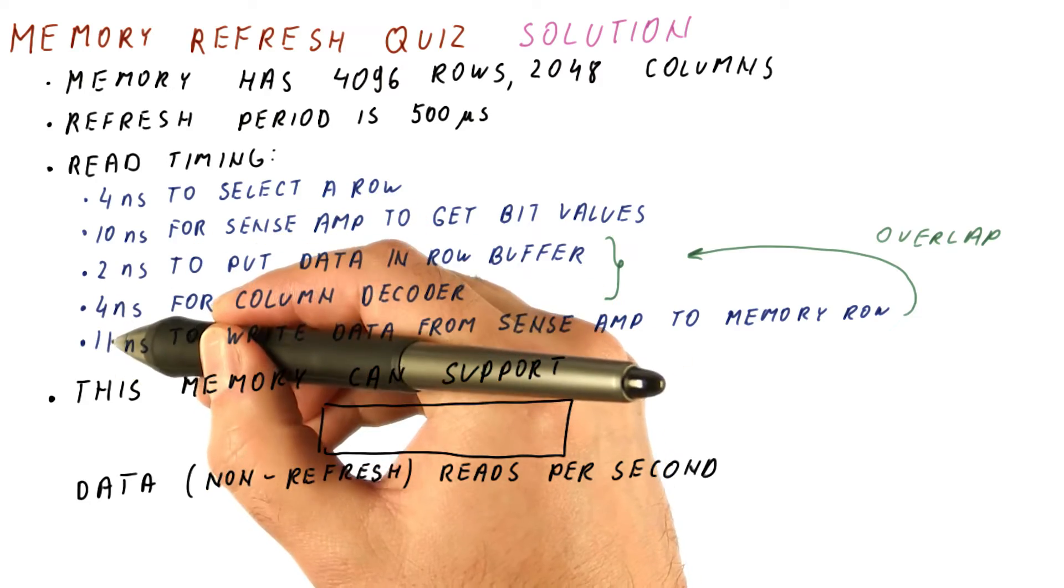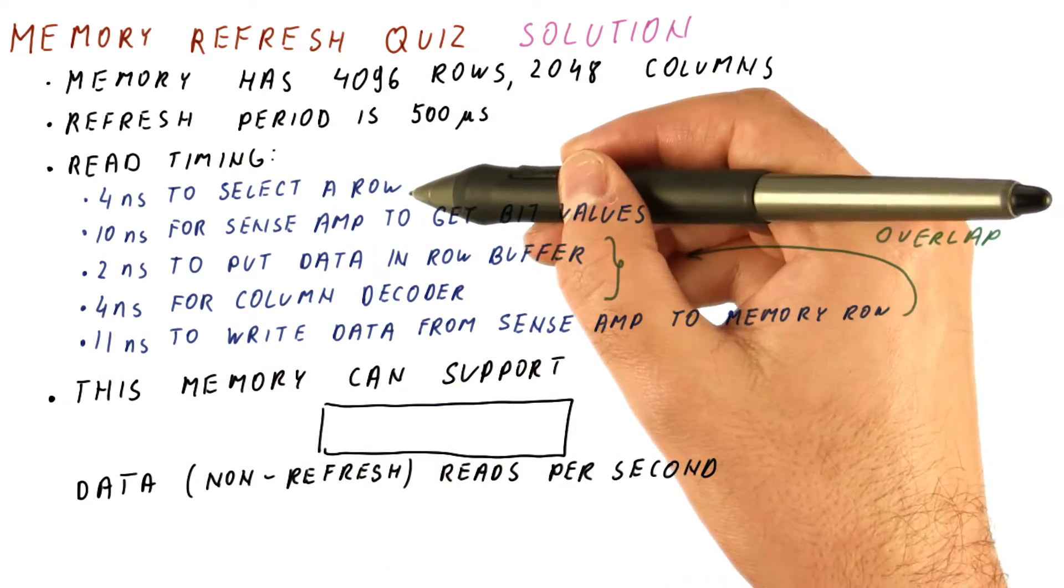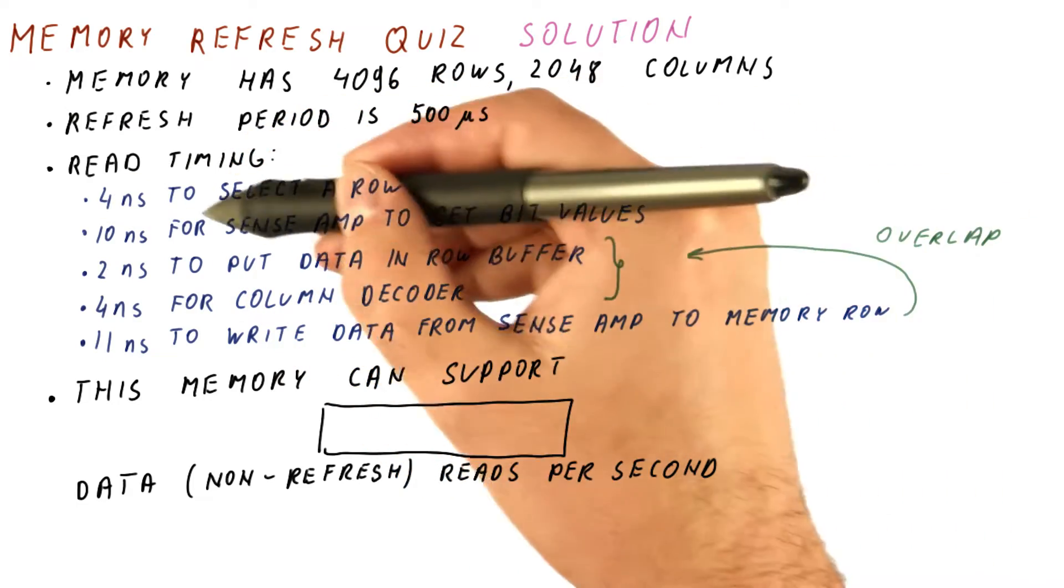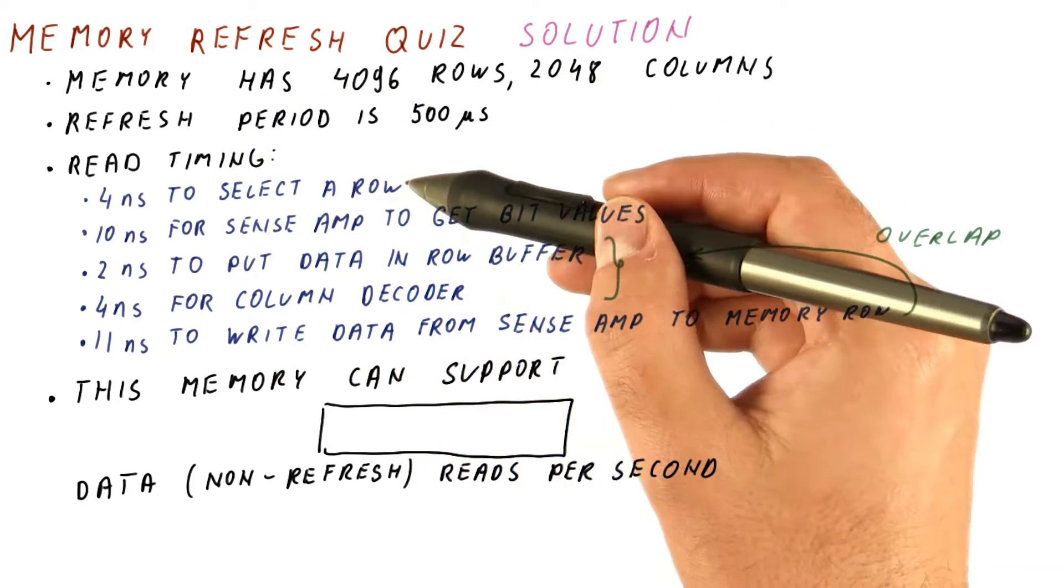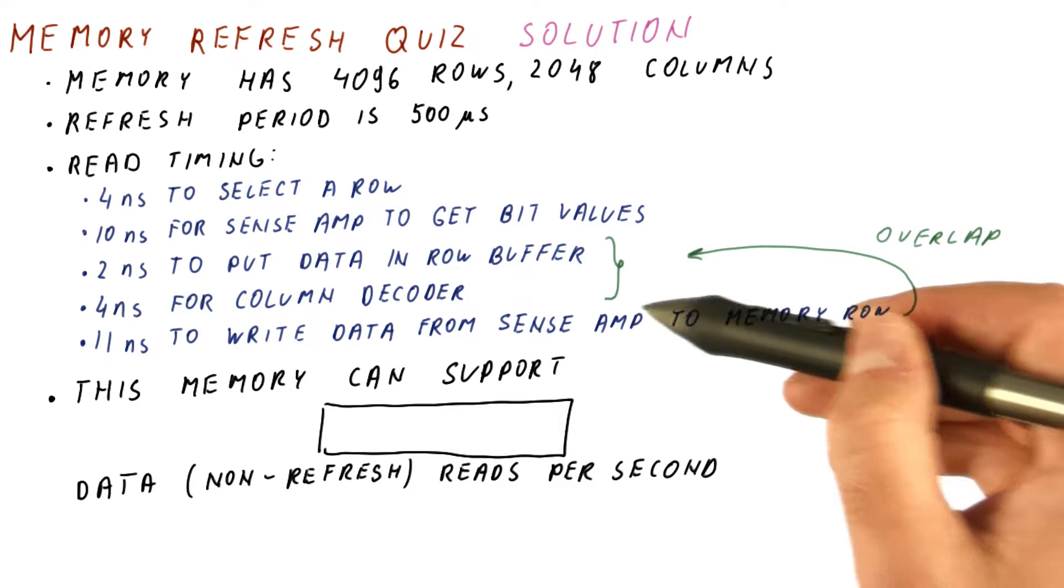Because 2 plus 4 is 6 and 11 nanoseconds is longer, that means that really the timing for a read will be to select a row. So we need to select a row, get the values from the row, and then write the data back.